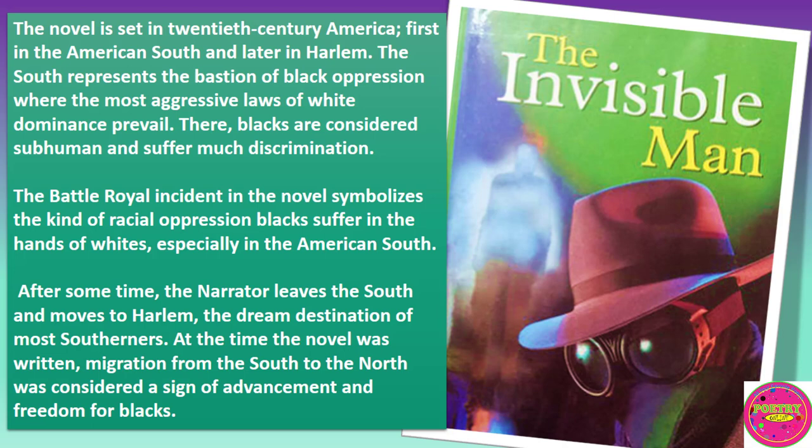Get ready for this lesson. Invisible Man is a novel written by Ralph Ellison. The novel is set in 20th century America, first in the American South and later in Harlem. The South represents the bastion of black oppression, where the most aggressive laws of white dominance prevail. There, blacks are considered subhuman and suffer much discrimination. The battle royal incident in the novel symbolizes the kind of racial oppression blacks suffer at the hands of whites, especially in the American South.